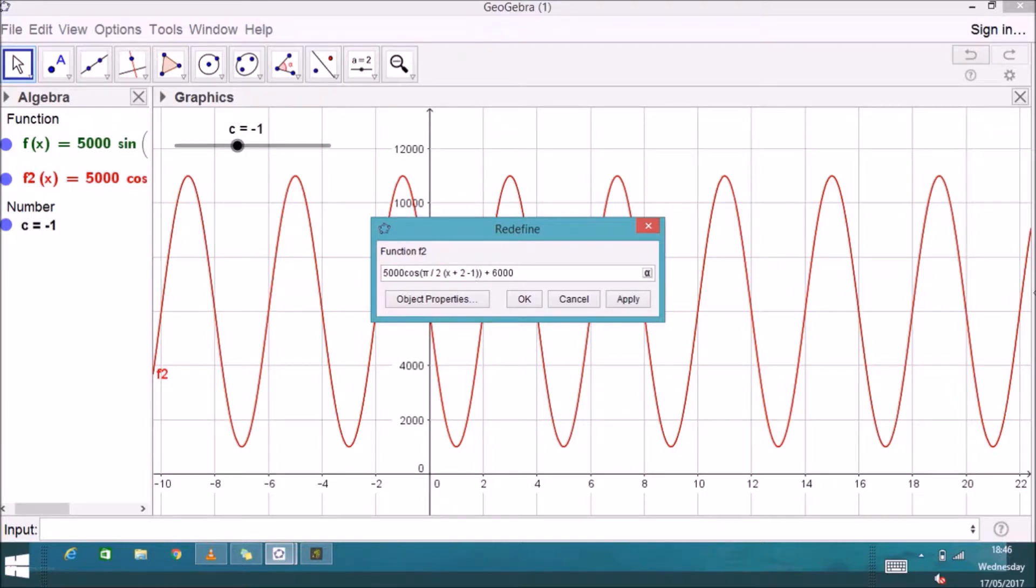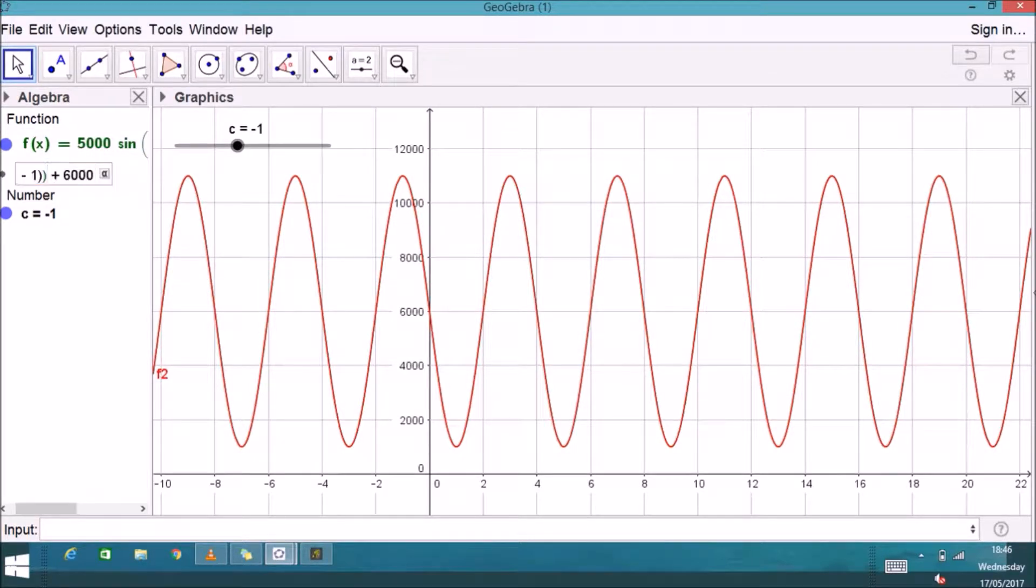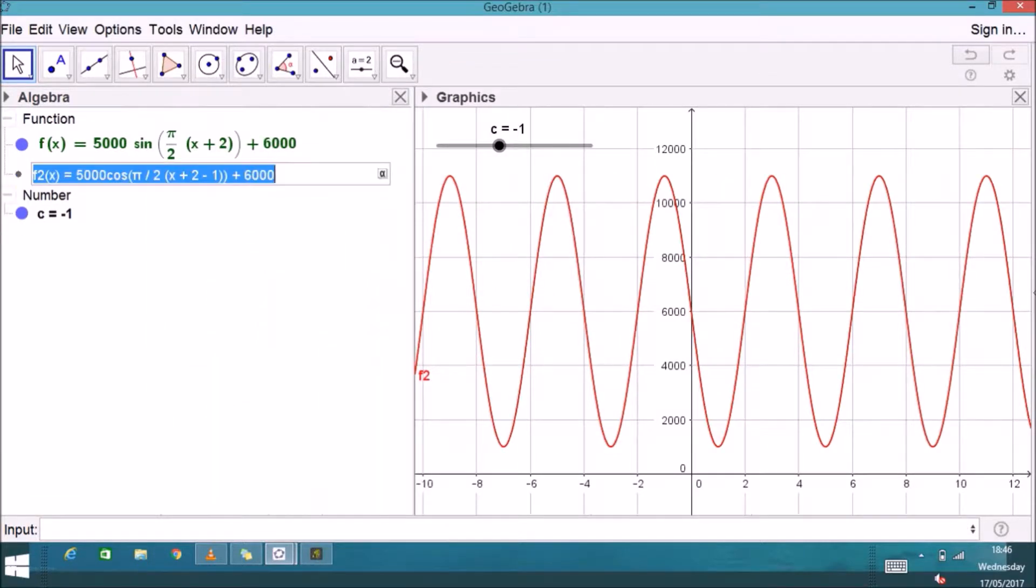So that looks like the number one in this case, but that's because we've got the coefficient π over 2 at the front of this bracket. So when you expand through you'll get π over 2 as the horizontal shift for this cosine function compared to the sine function.